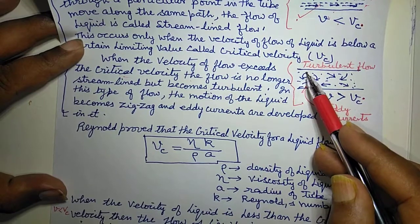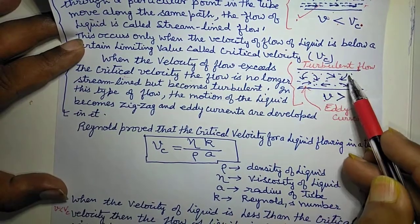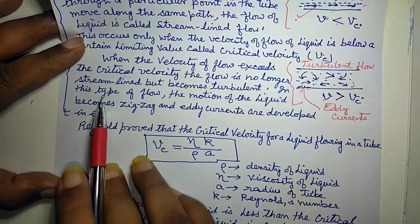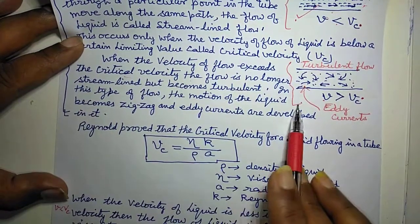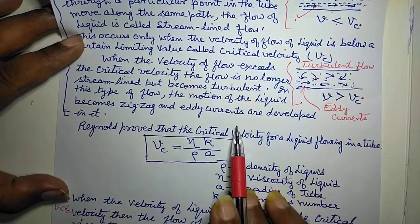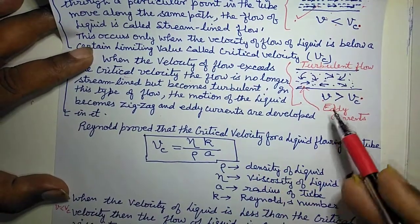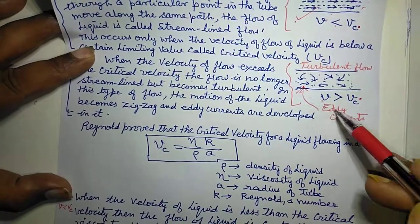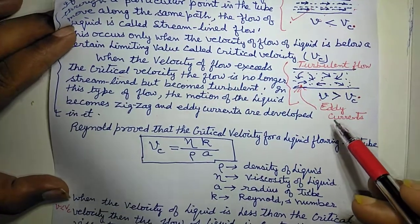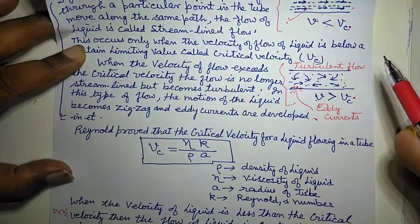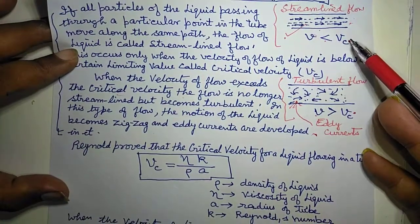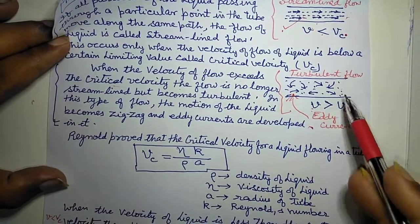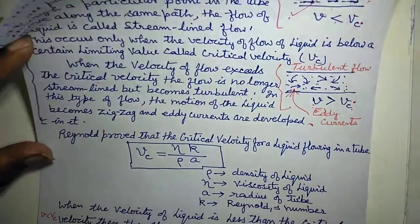Yeh dekhiye — yeh liquid particle idhar ja raha hai, ek idhar ja raha hai, ek idhar ja raha hai — and toh yeh zigzag motion ho gaya. The motion of the liquid becomes zigzag and eddy currents are developed. Is mein prakar ki dhaaryein hain, eddy currents paida ho gayi hain. Toh janaab khas — agar velocity critical velocity se kam hai toh streamline flow hoga, aur critical velocity se zyadha hai toh turbulent ya zigzag flow hoga.